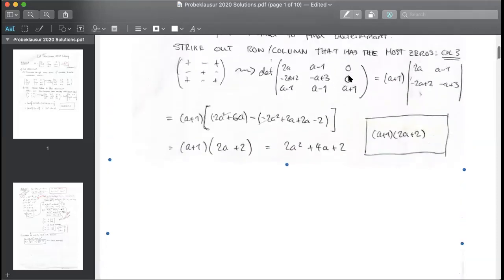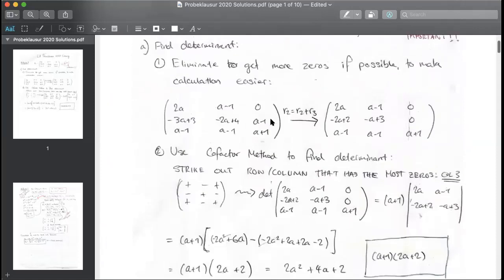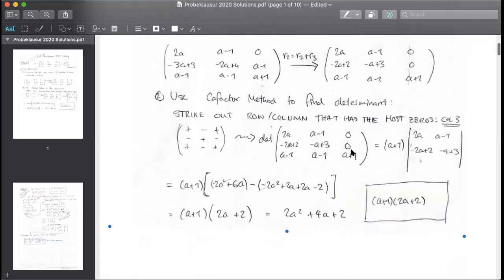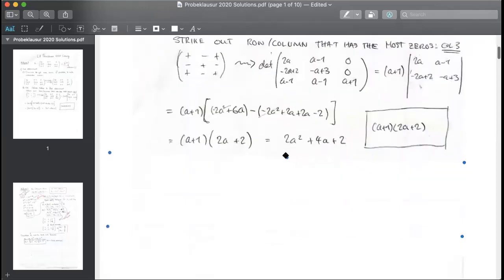Imagine if we didn't have a zero here, then we would have another one of these. It would be what you had before. It would be a minus one times the lower matrix 2a, a minus one, a minus one, a minus one. You don't want to do that. It's easier to just get rid of it in the first place. And that's your answer. That's your determinant.